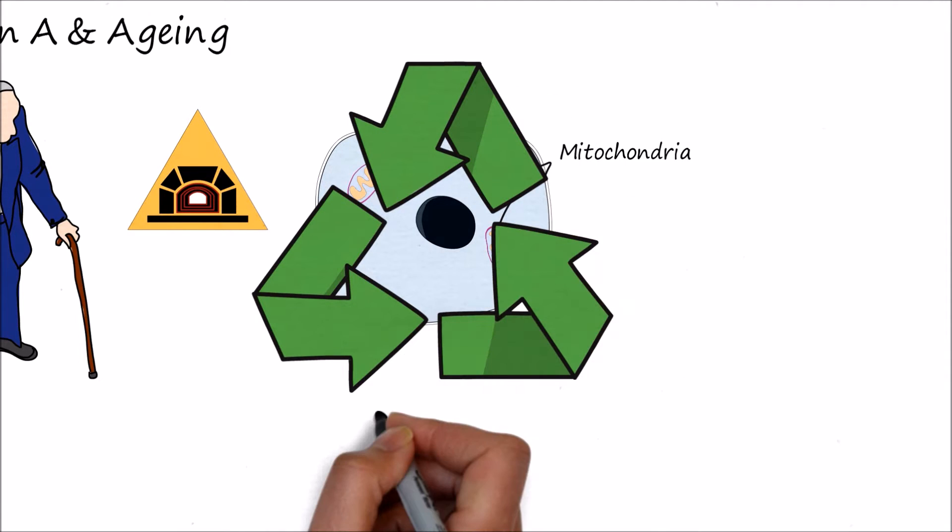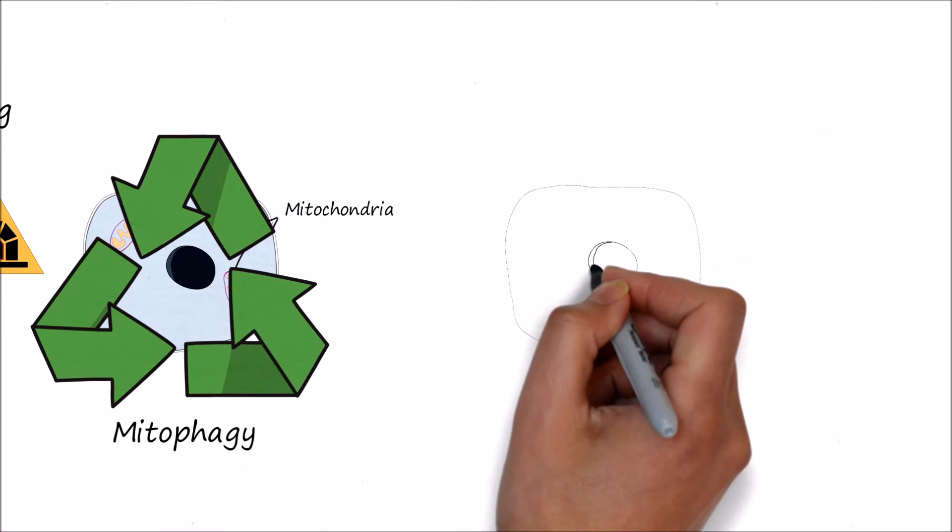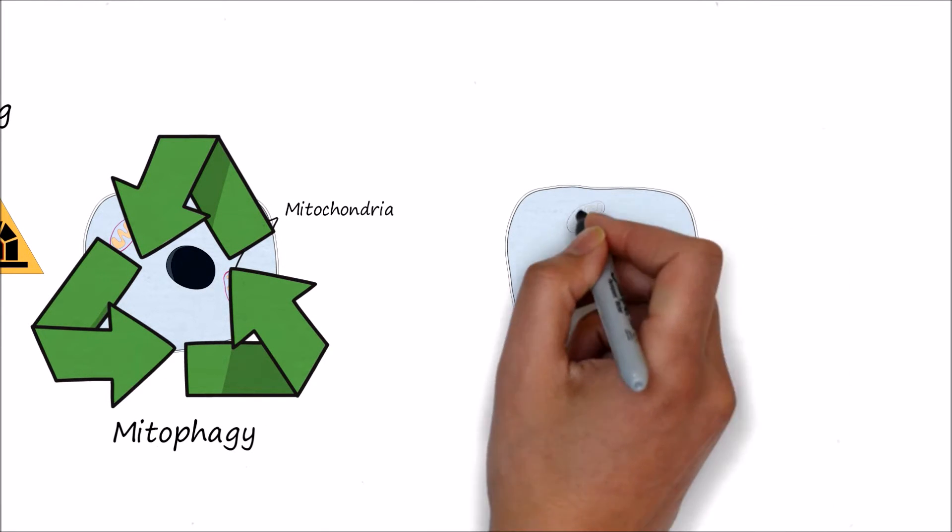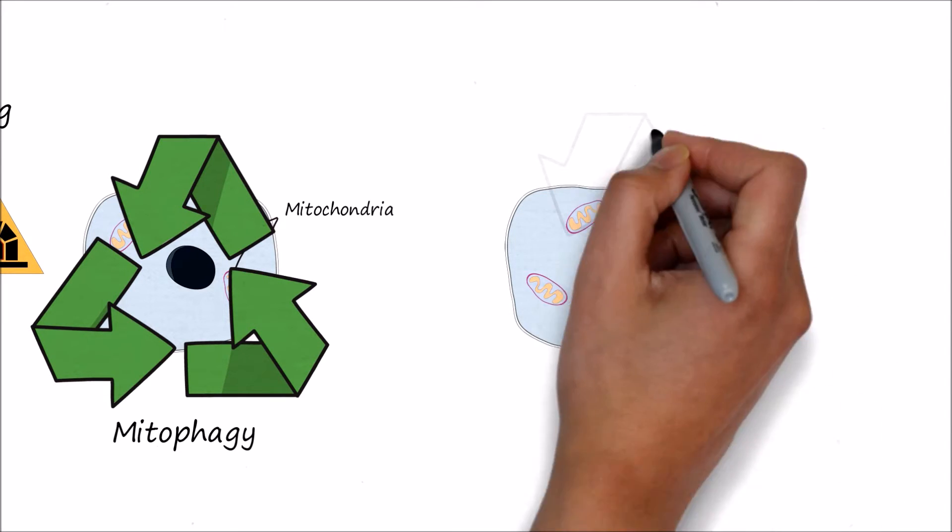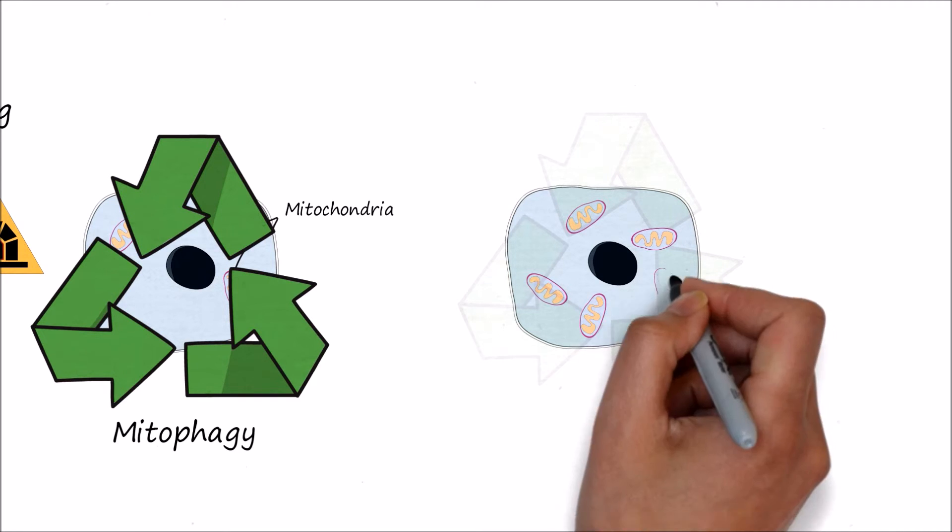Healthy cells recycle their mitochondria regularly by a process called mitophagy. As we grow old, the ability of our cells to recycle mitochondria goes down. As recycling becomes irregular, the mitochondria will start to accumulate in the cell.